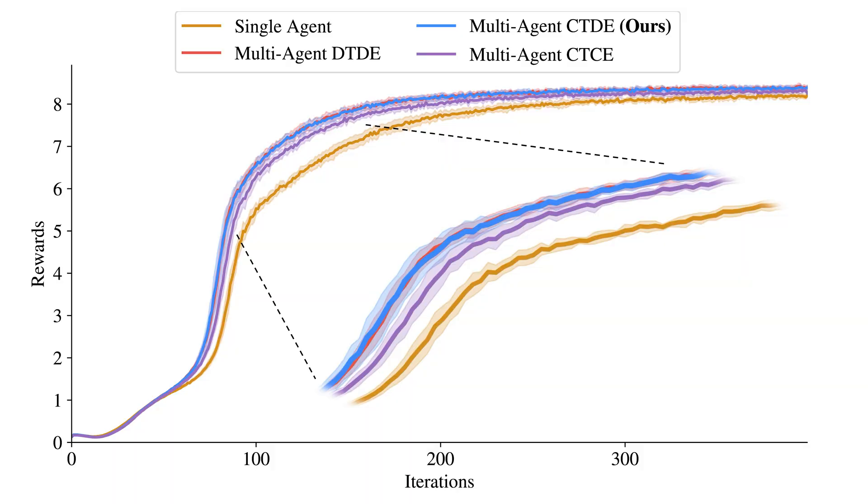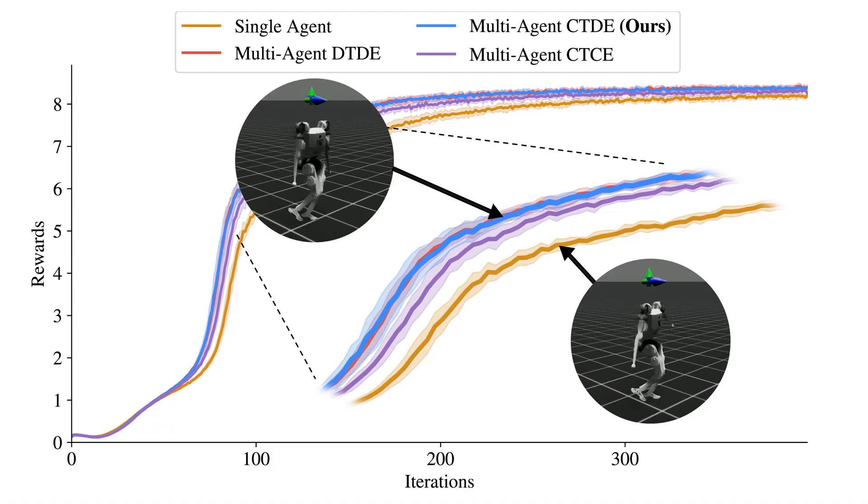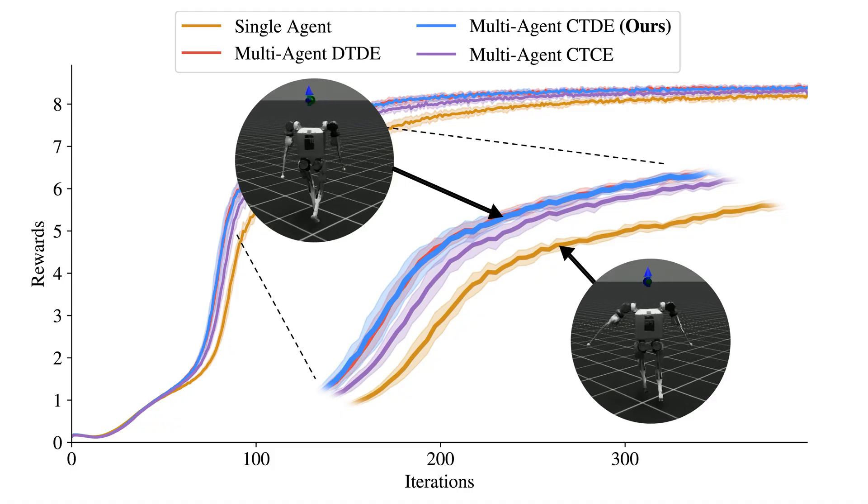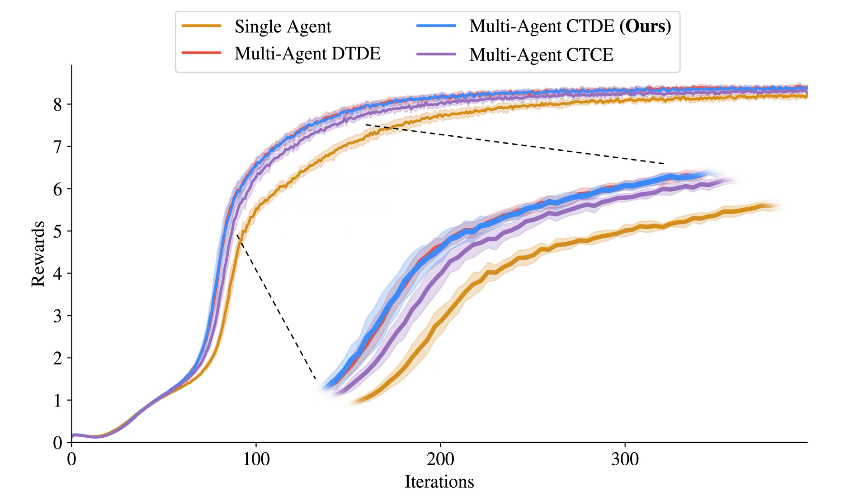We compare our approach to several architectural baselines, including single-agent and multi-agent settings. Our method, multi-agent CTDE, converges faster and achieves higher rewards, with lower-advantage variants showing more stable learning from centralized critics.